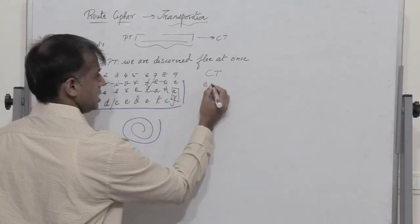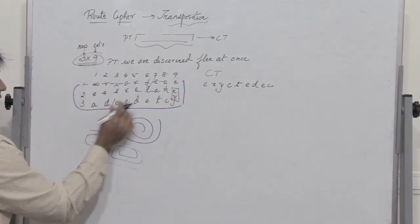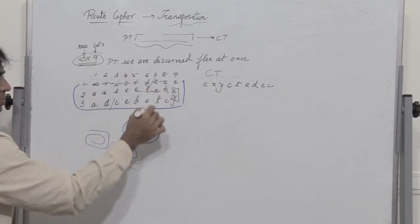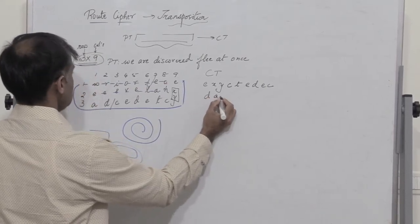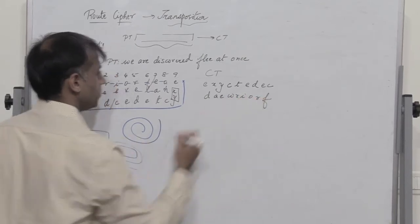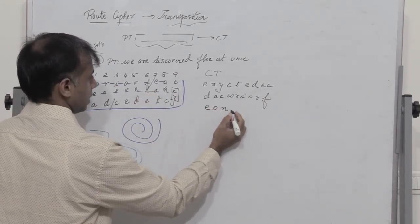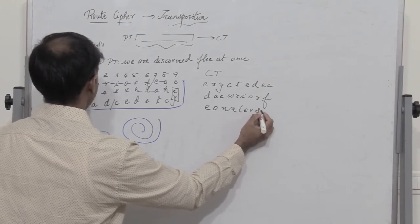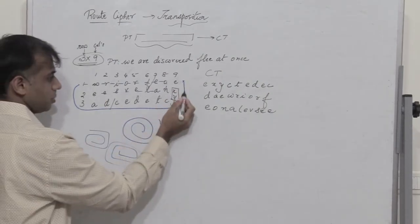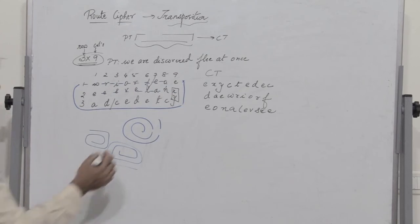So now the ciphertext would be E, X, Y, C, T, E, D, E, C. The first nine and next I start from D, A, E because it is moving spirally inward. So I have D, A, E, W, R, I, O, R, F, and then I have E, O, N, A, L, E, V, S, E and E. Since we are moving from the top right in a spiral manner moving inward, I write all the alphabets in this way so this forms the ciphertext.